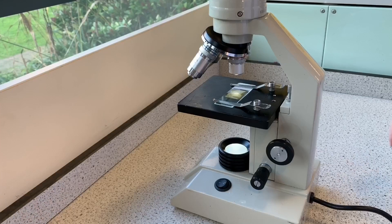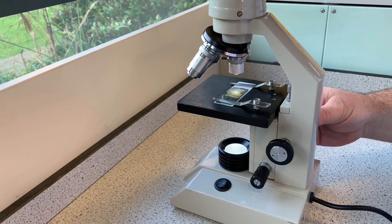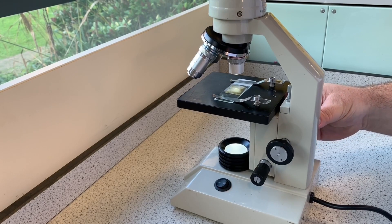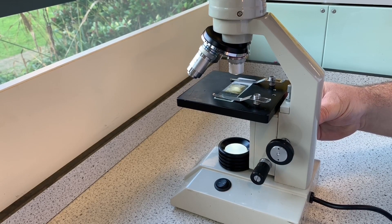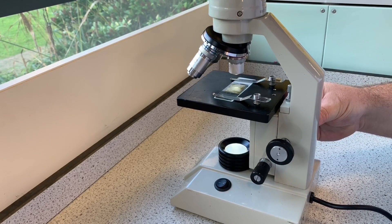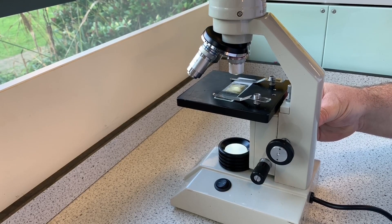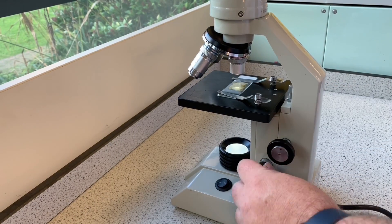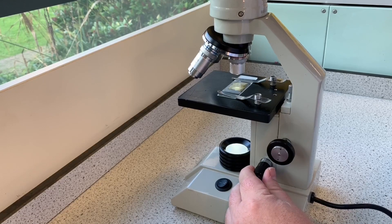There's our slide. To view the onion cells, we put the stage into its lowest position and put the objective lens to the lowest magnification. We then turn the coarse adjustment knob and gradually bring the specimen closer to the objective lens. As it starts to come into focus, we'll notice that it might be a bit blurry. This is the point at which we use the fine adjustment knob to improve the focus.